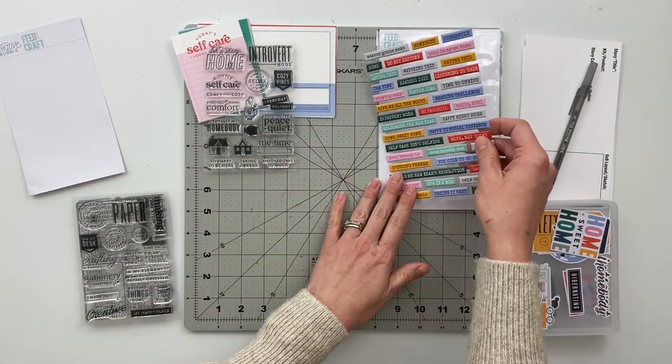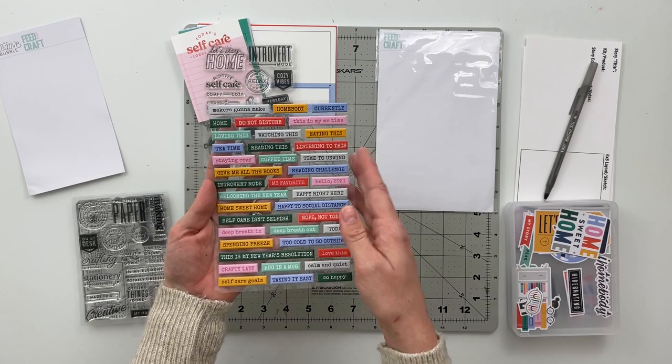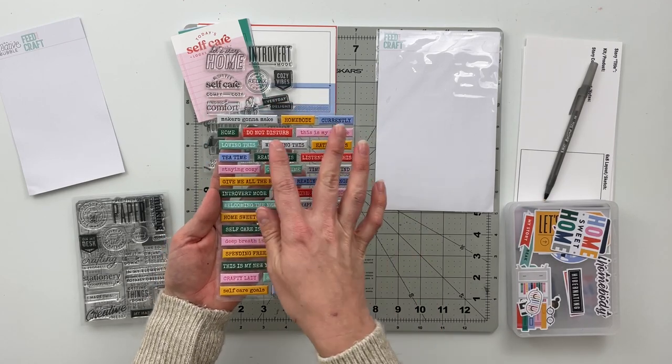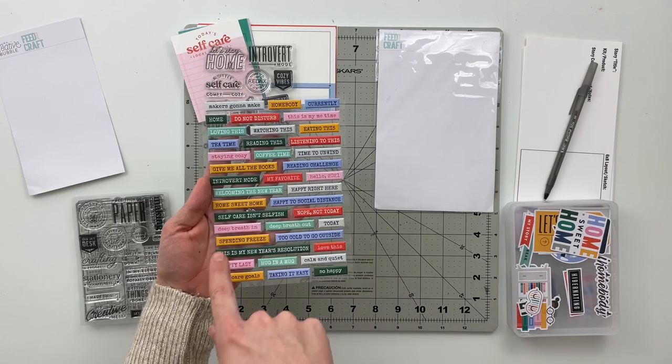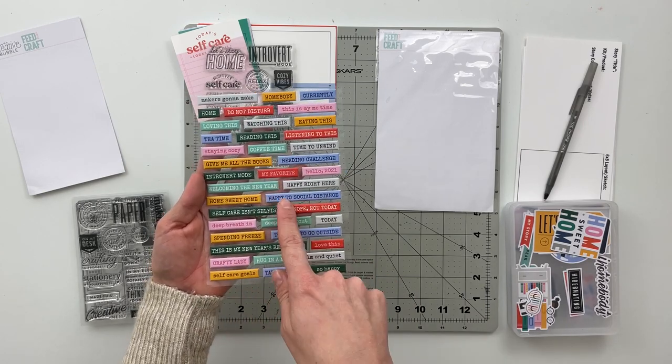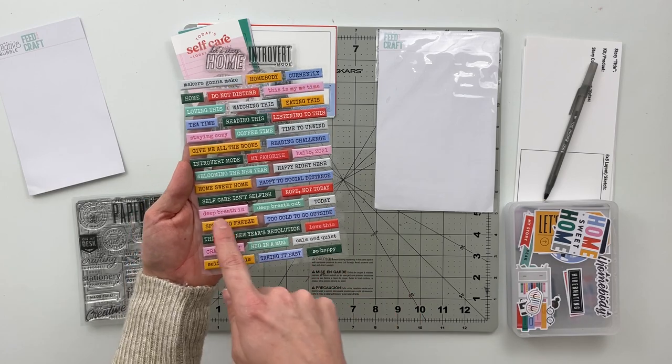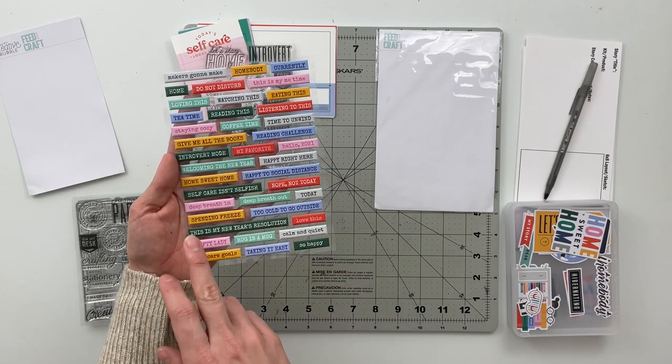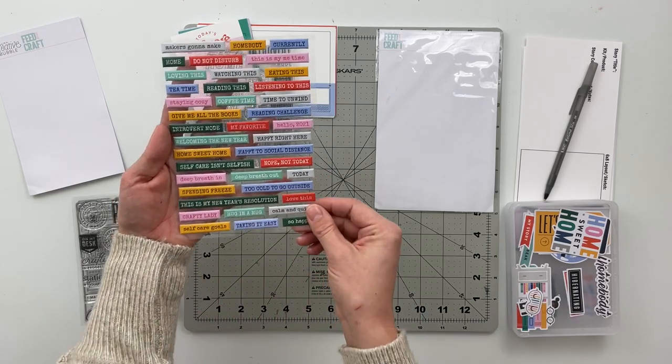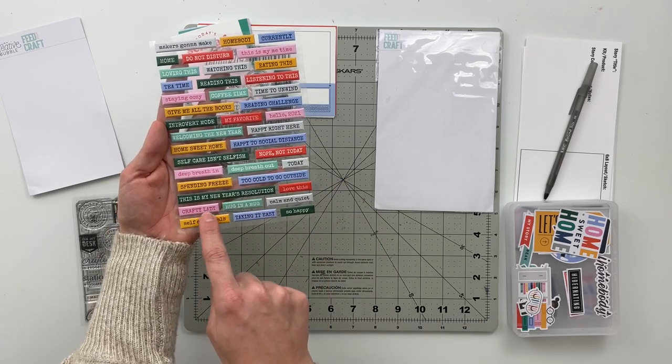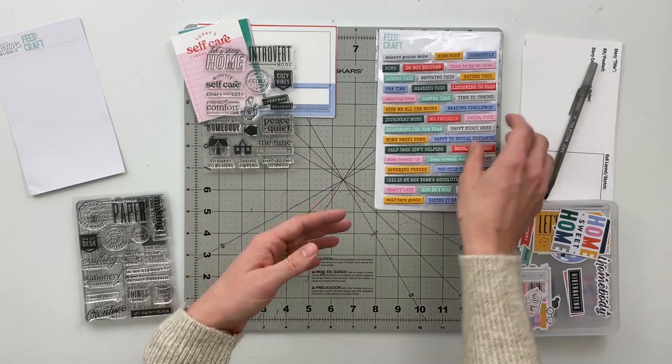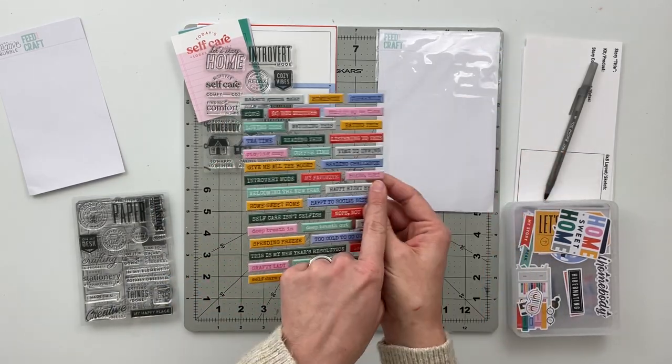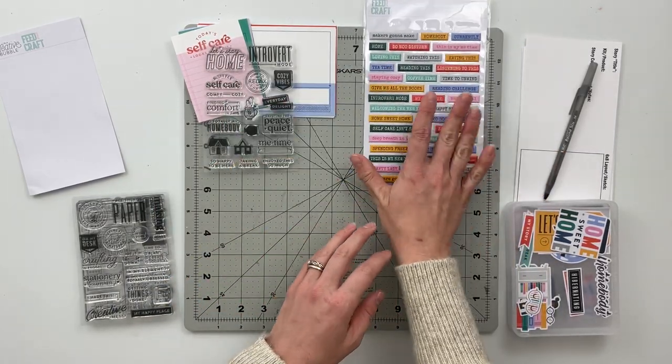There are some puffy stickers that go along with it. Things like maker's gonna make, homebody currently, do not disturb, this is my me time, watching this, coffee time, give me all the books, welcoming the new year, happy to social distance, self-care isn't selfish, this is my new year's resolution, too cold to go outside, self-care goals, crafty lady and so on. I mean there's a ton of these and I love them. Oh hello 2021. So yeah love those.